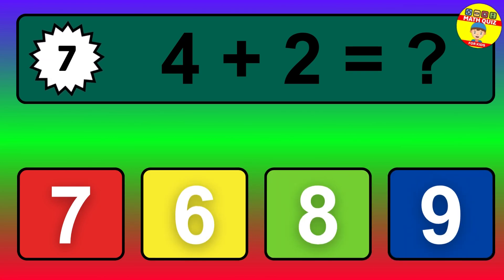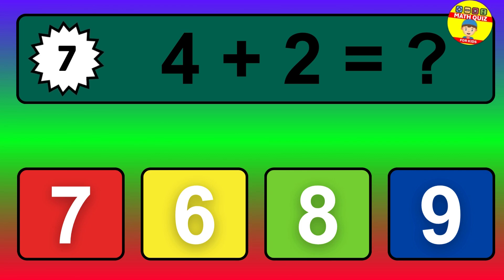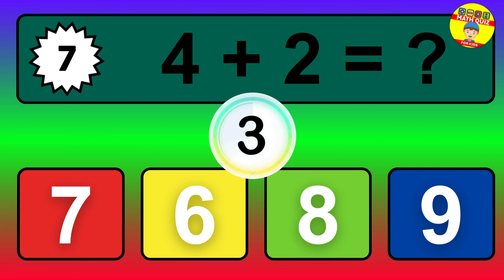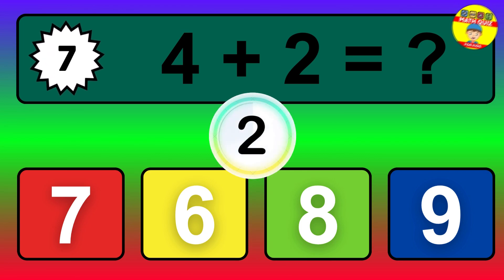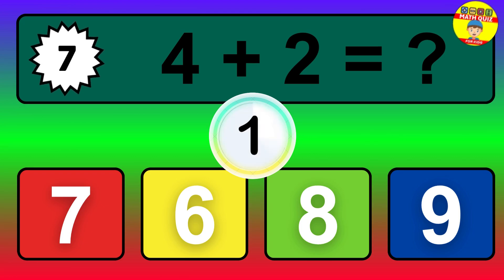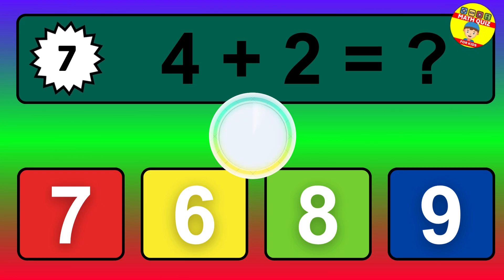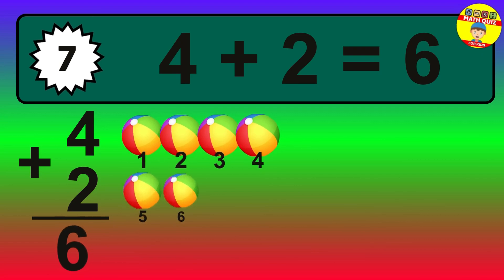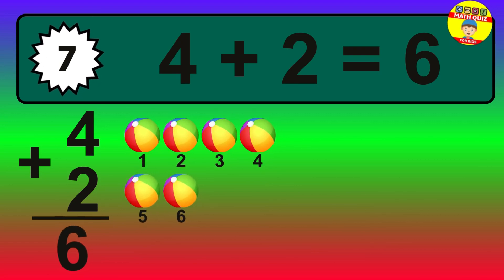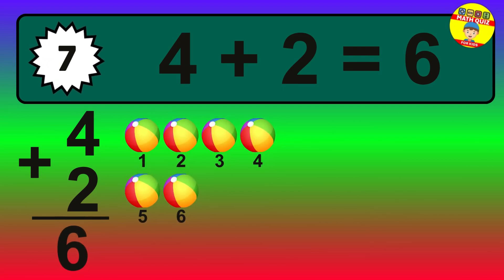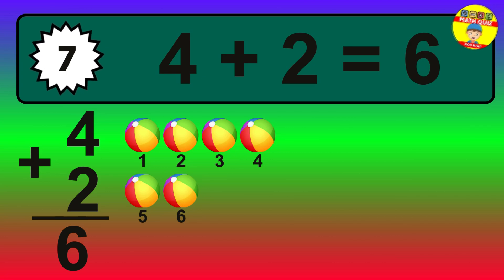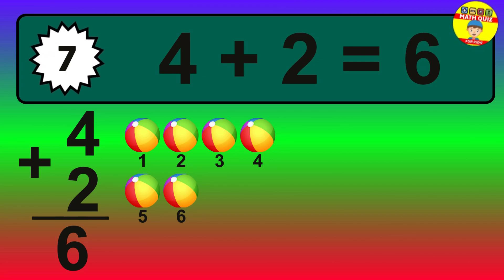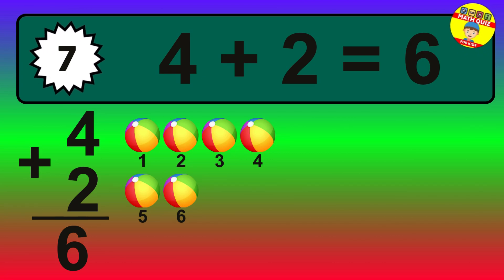Question 7. 4 plus 2 equals what? The answer is 4 plus 2 is 6. Let's count it: 1, 2, 3, 4, 5, 6.